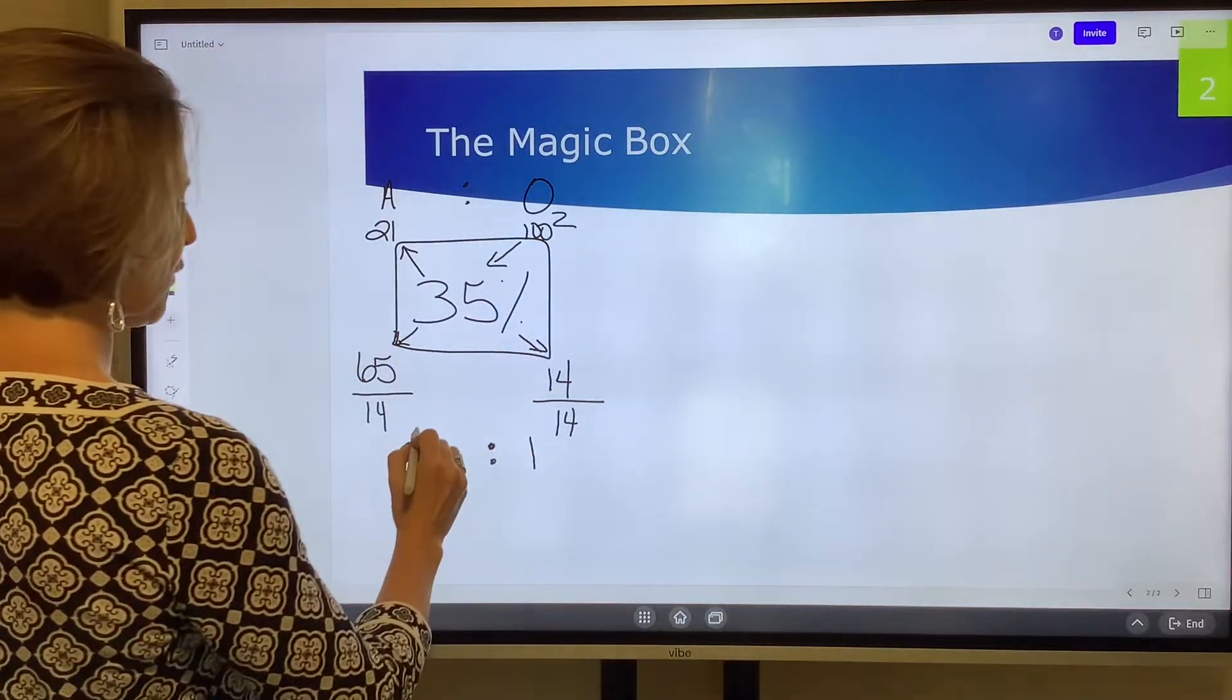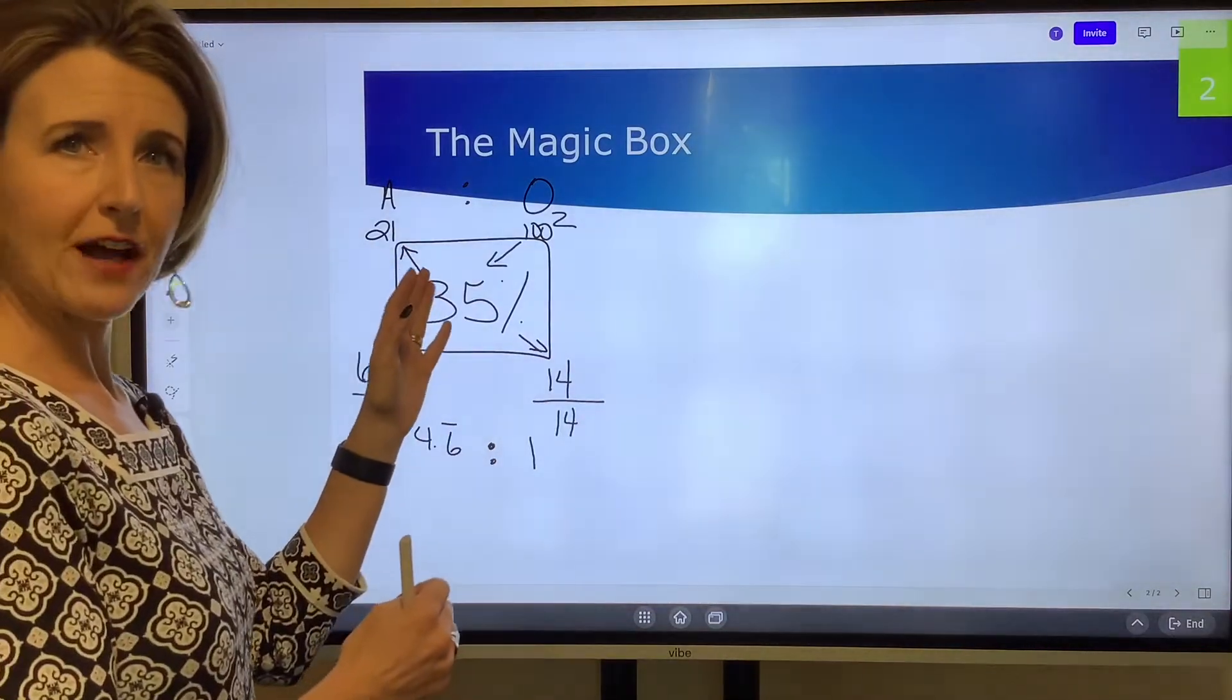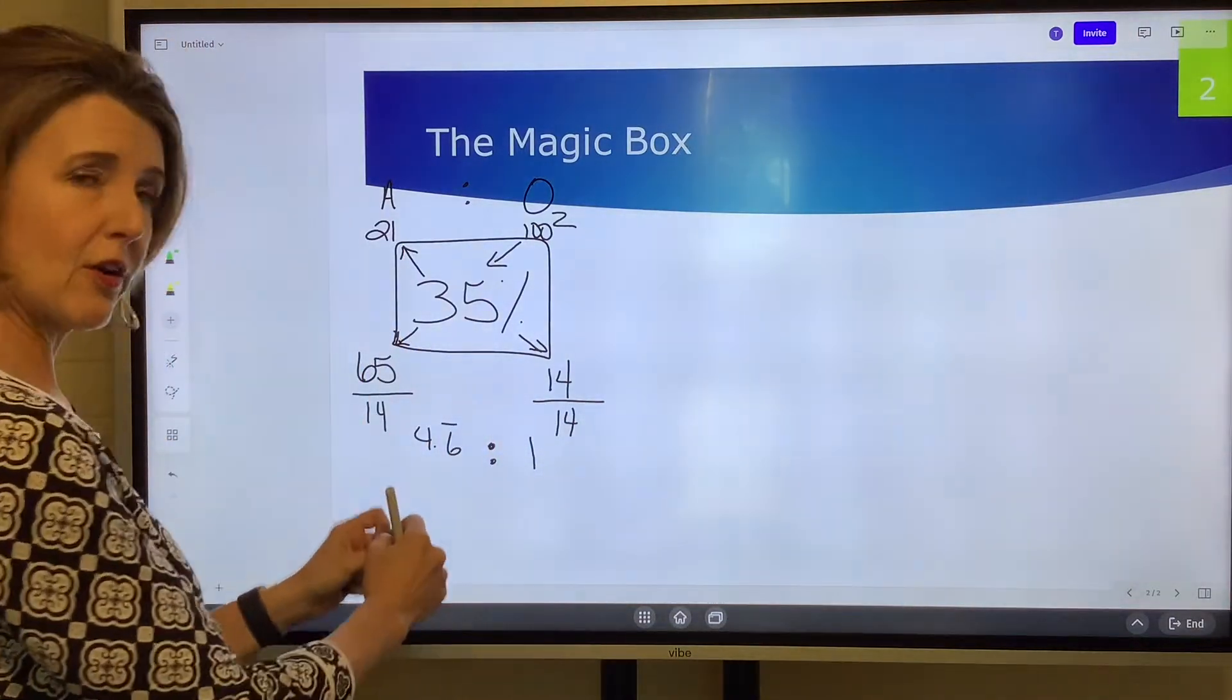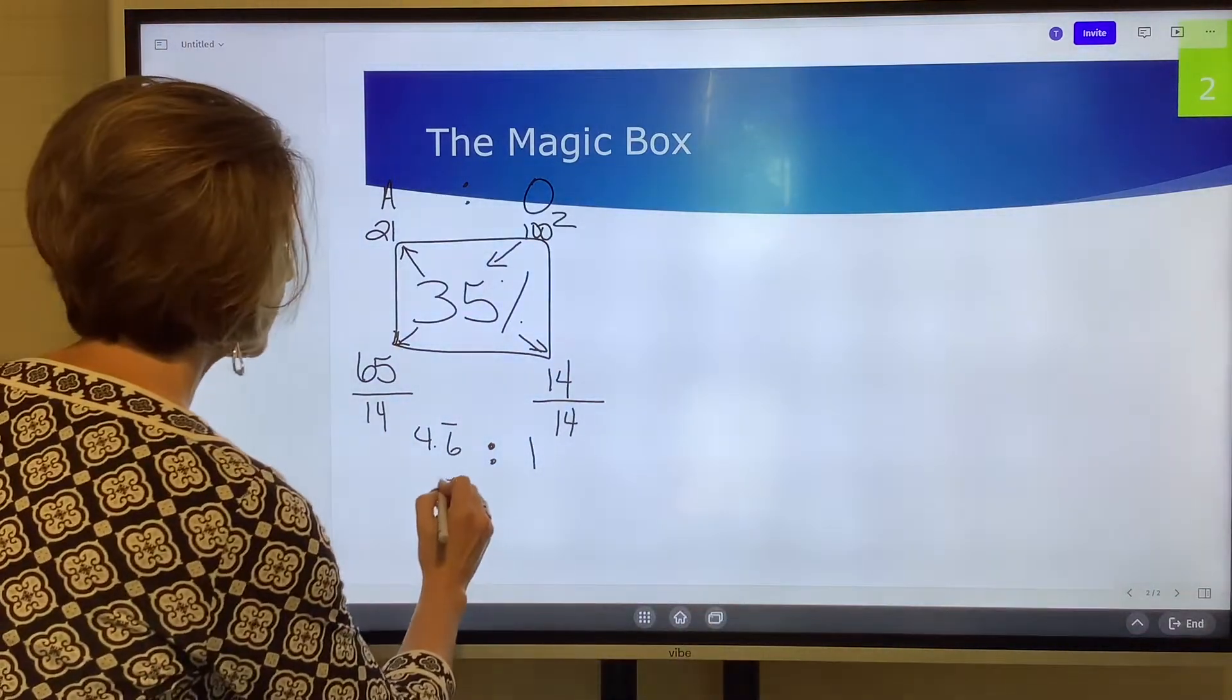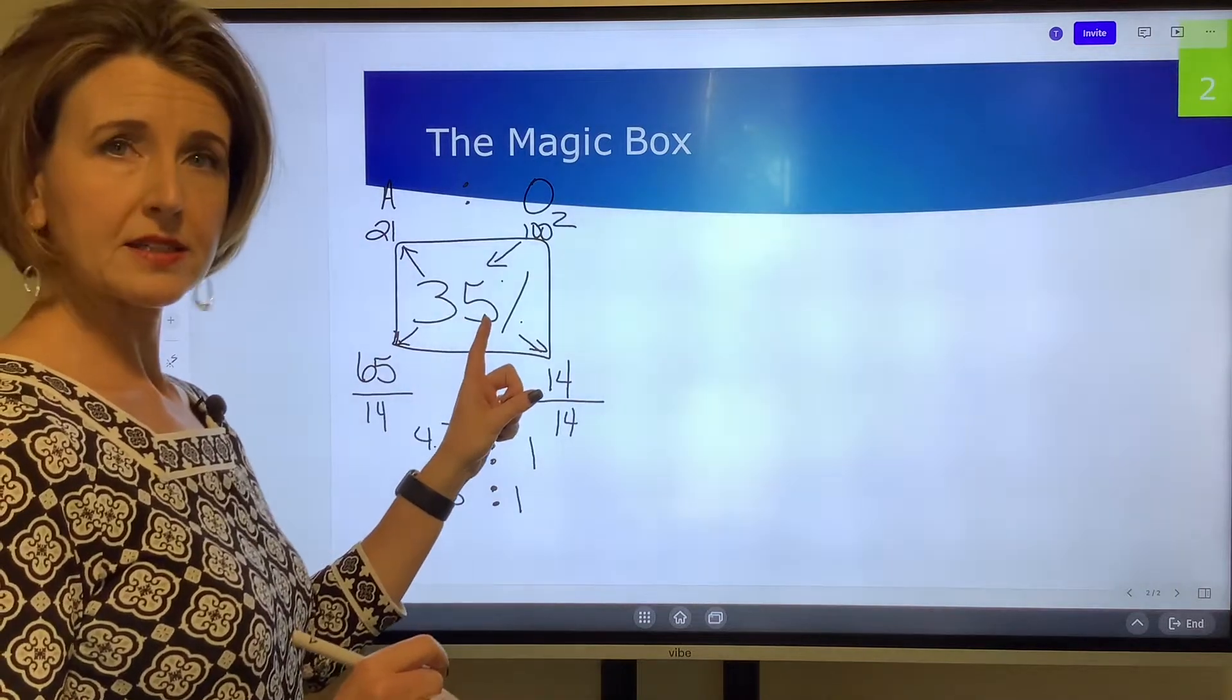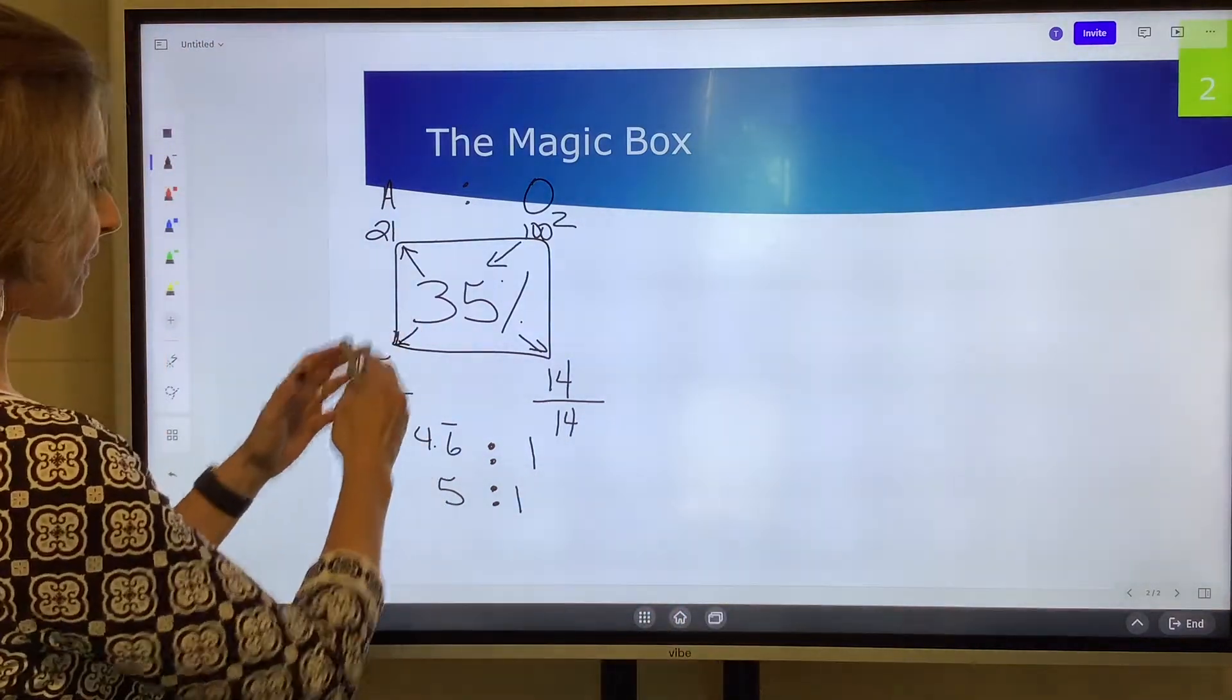65 divided by 14 is 4.6 repeating. This is called the air to oxygen ratio. When your FiO2 is less than 50 percent, you're going to round your air to oxygen ratio to the nearest whole number. So 4.6 would be 5 to 1. Let me say that again so it's clear: anytime the FiO2 in the box is less than 50 percent, you're going to round your air to oxygen ratio to the nearest whole number. So 35 percent is a 5 to 1 ratio.